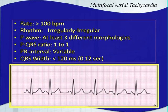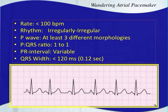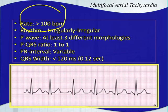Multifocal atrial tachycardia is exactly the same as wandering atrial pacemaker except the rate is greater than 100 — that's the only difference. So with WAP, wandering atrial pacemaker, the rate must be less than 100 beats per minute. With MAT, multifocal atrial tachycardia, the rate must be greater than 100 beats per minute. It's still irregularly irregular, the P wave must have at least three different morphologies, the P to QRS ratio should be one to one, the PR interval will vary, and the QRS width should be narrow.